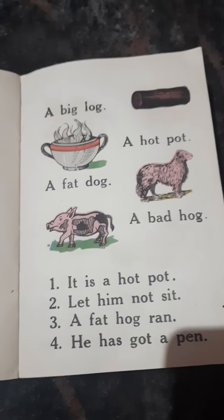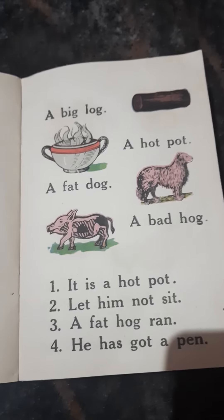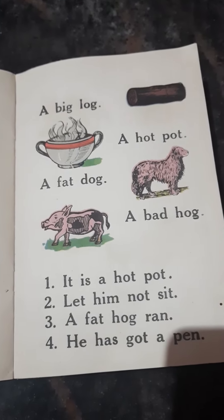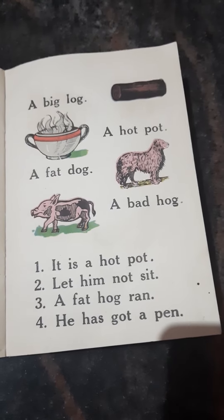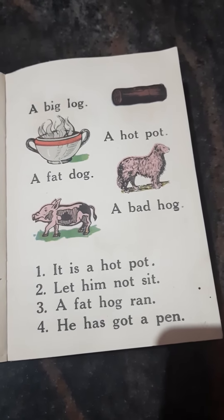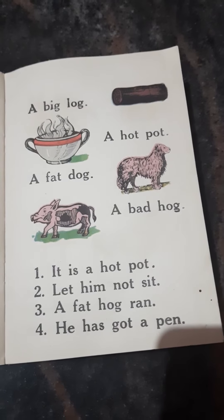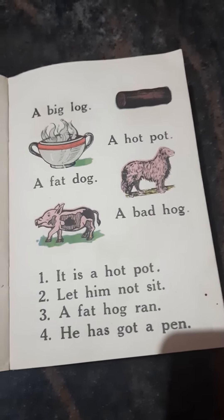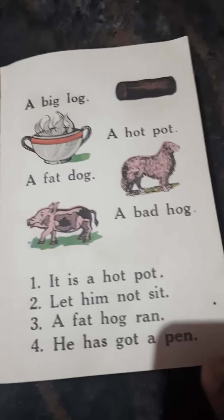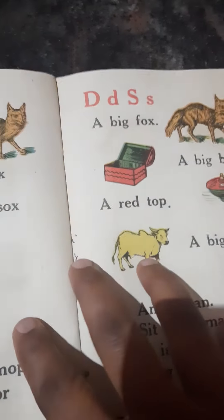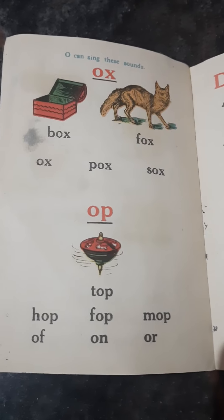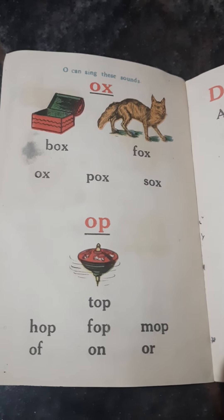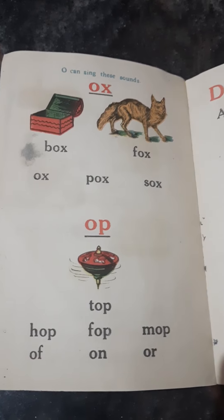Hello children! In this video we learn the words ending with -og: dog, hog, bog, fog, log, cog, knock, and tog. The words ending with -ot: pot, dot, got, hot, lot, not, and rot.